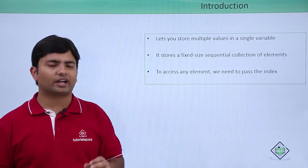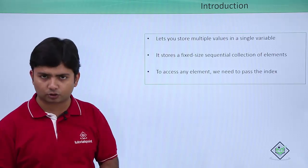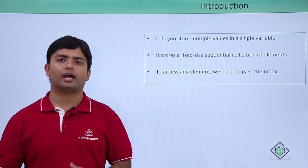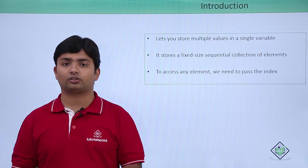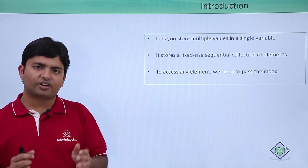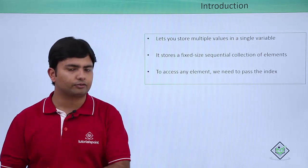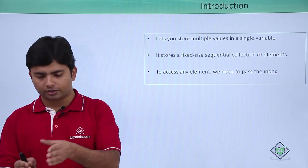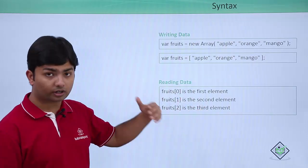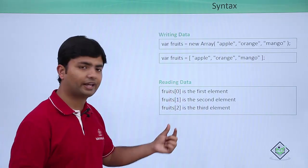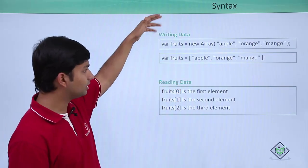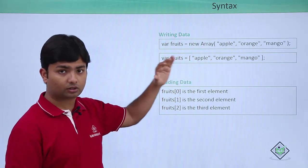Whenever you want to access a specific element block from the array, you have to pass the index. When you create an array, the index of each memory slot starts with zero — zero, one, two, three, and so on. For example, if I have defined an array of size five, the lower index starts at zero, then one, two, three, and four. So whenever I want to retrieve or assign a value, I have to pass the index like that.